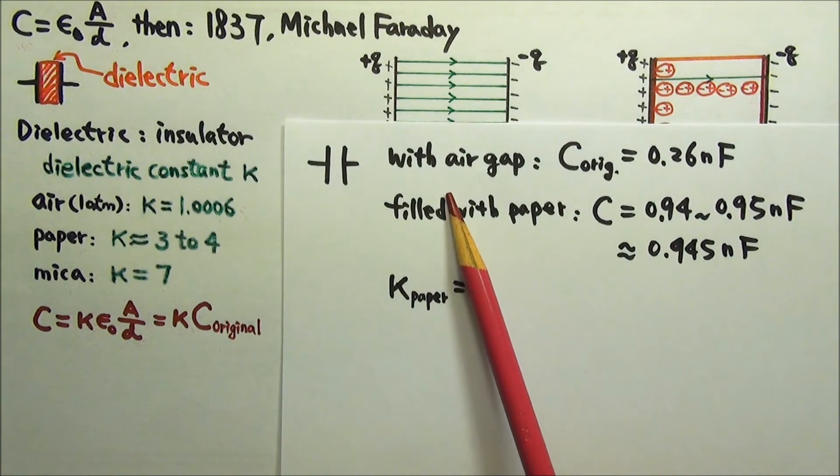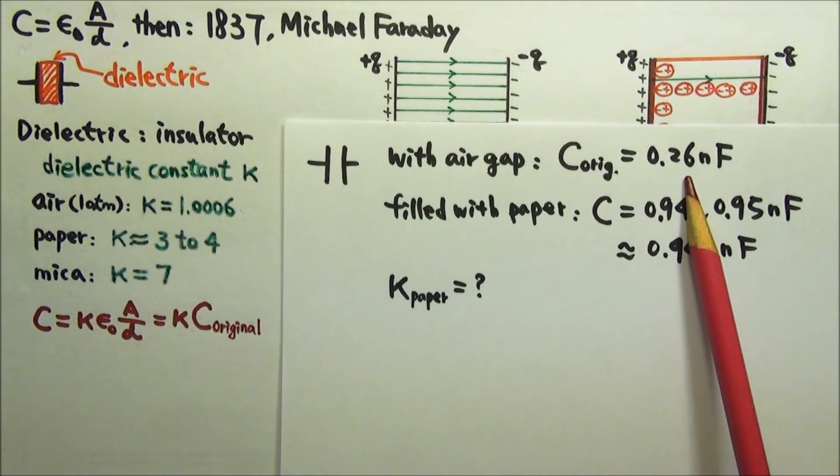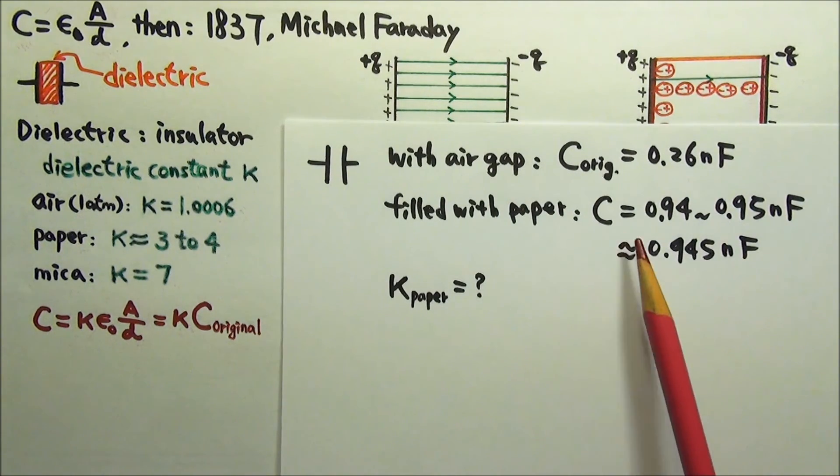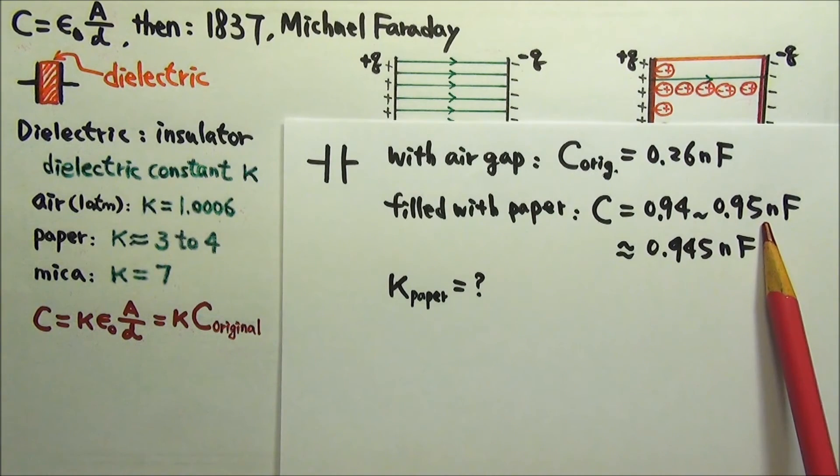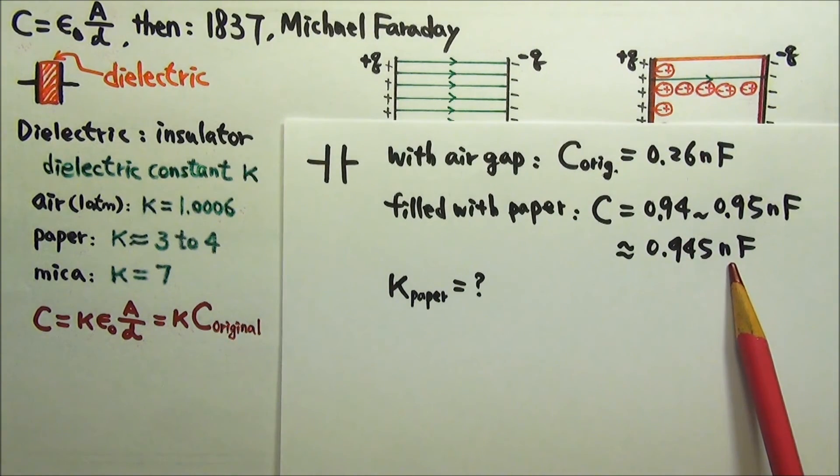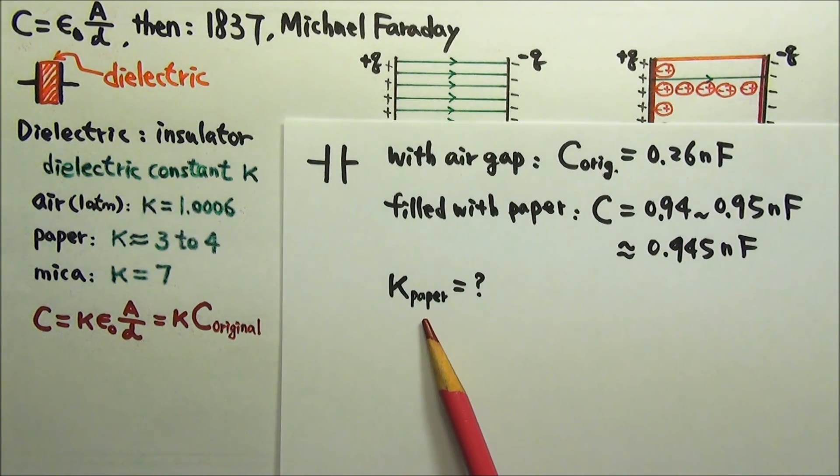So for that parallel plate capacitor, when it's air in between the plates, the capacitance is 0.26 nanofarad. When it's filled with paper, the capacitance becomes between 0.94 and 0.95 nanofarad. Let's just use 0.945 for it. Please use this information to find the dielectric constant kappa for the paper we used.